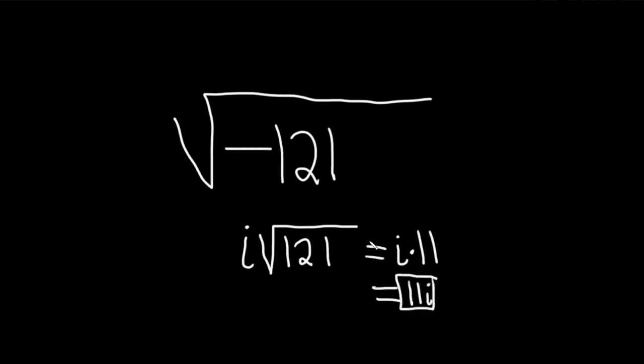Now there's a faster way to do this. Instead of showing all of this work, you can basically look at this and say whenever there's a negative in the square root, you know you're going to have an i, always. And then the square root of 121 is 11. So this is 11i.